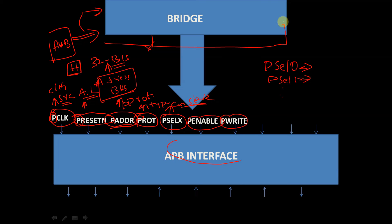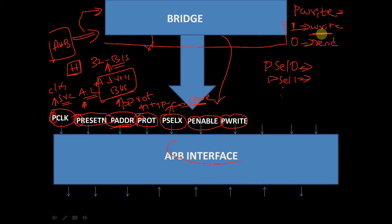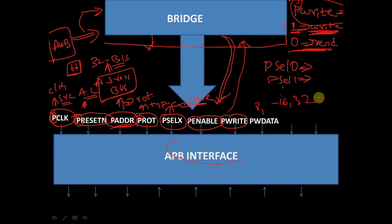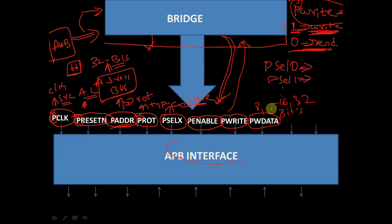PWRITE indicates the direction of the data. When PWRITE equals 1, it indicates a write operation — meaning data is transferred from the bridge to the APB interface. When PWRITE equals 0, it is a read operation — meaning data direction is from the APB interface to the bridge. We also have PWDATA, the write data bus, which can be 8, 16, or 32 bits wide and carries data from the bridge to the APB interface.